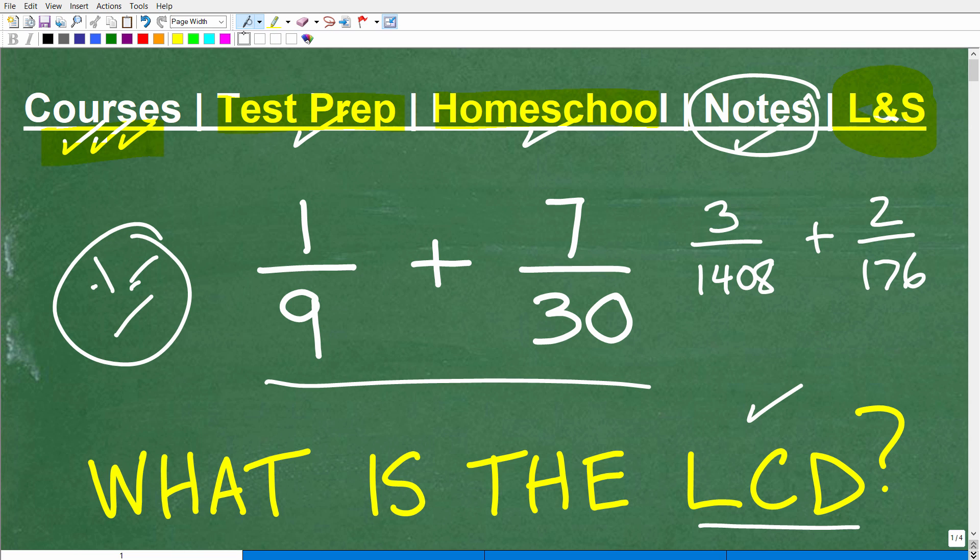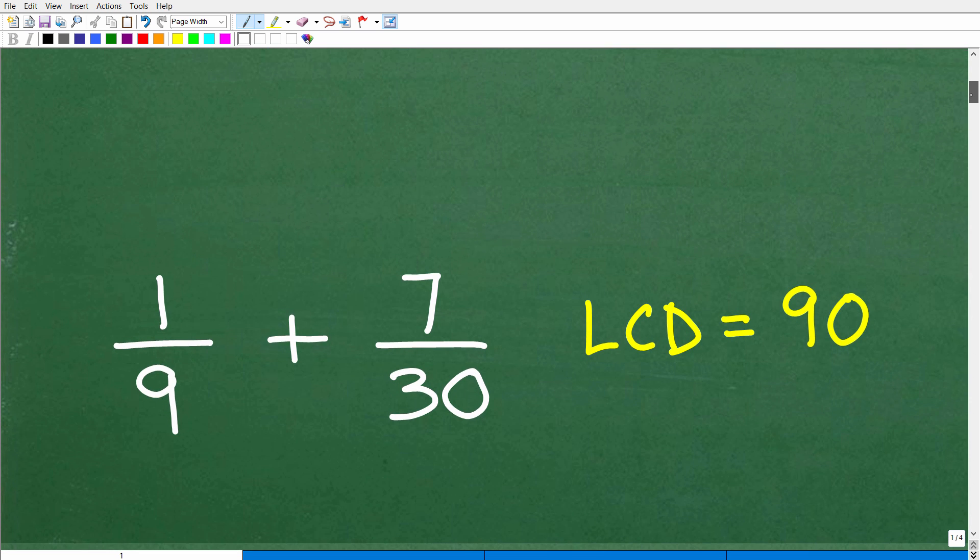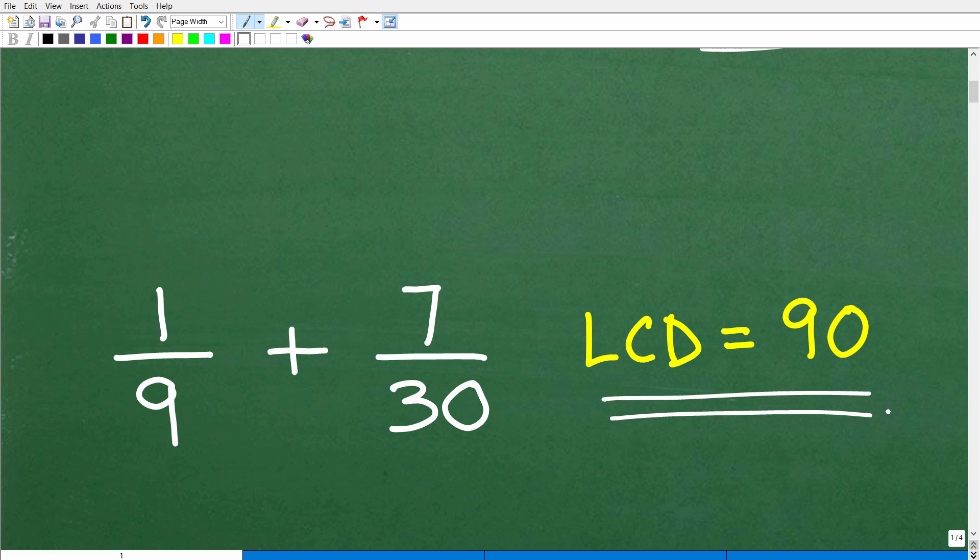If this video helps you out, I want you to really consider helping me out by liking it and subscribing. So what is the LCD or the lowest common denominator? We're not going to add these fractions. I'm just looking for the LCD. Let's take a look at the answer. The answer is 90.